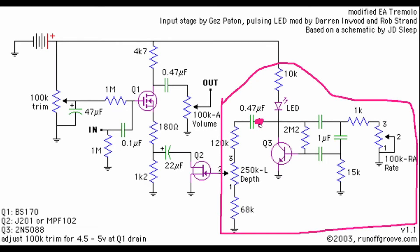Once we've got our transistor biased up, we have a very large resistor between the base and the collector, three large value capacitors, a fixed resistor to ground, and a variable resistance to ground that controls our rate. This potentiometer is set up as a variable resistor, so the total resistance along this path to ground varies between 1K ohm and 101K ohm, giving us a nice wide range of speeds for our LFO.